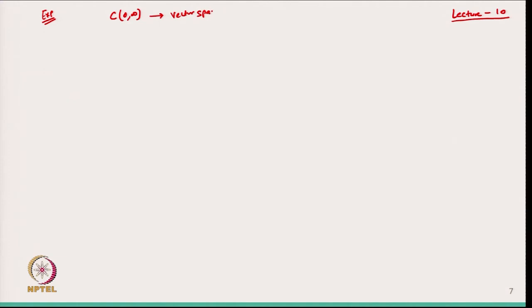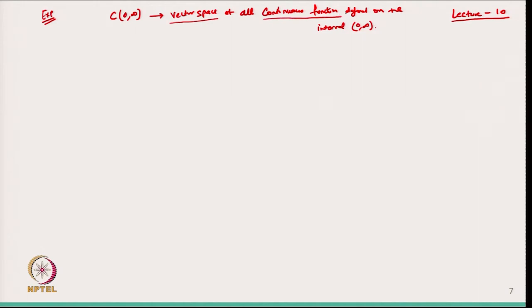In the previous lecture, we started with the definition of linear dependence and independence. In this case, I am taking one example that belongs to C⁰∞, which is the vector space of all continuous functions defined on the interval (0, ∞).